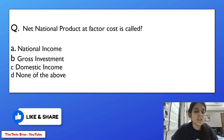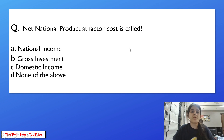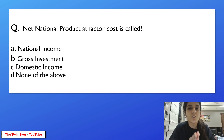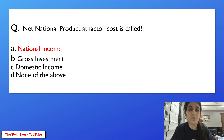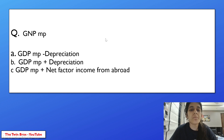Next question: net national product at factor cost is called — national income, gross investment, domestic income, or none of the above? The answer is national income.